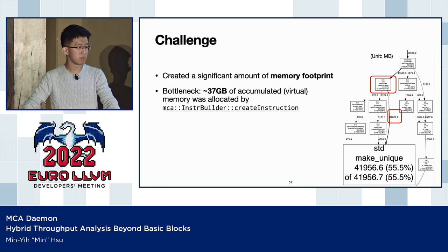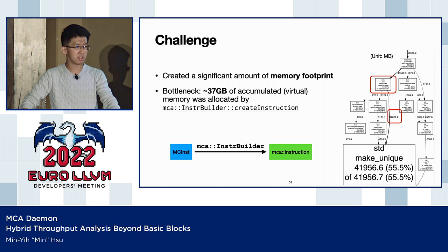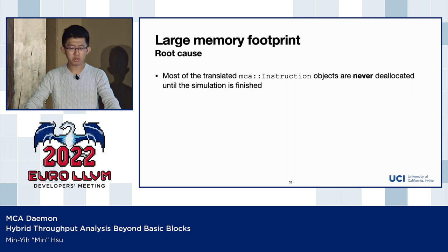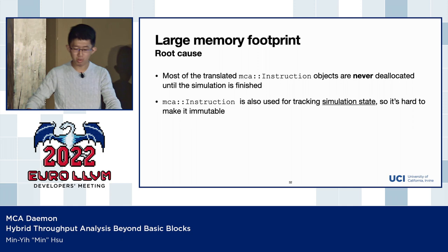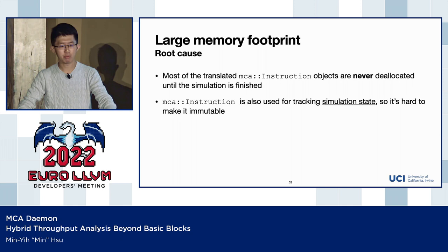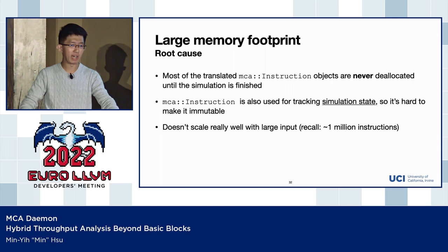This function was 'InstBuilder converting MCInsts to MCA instructions.' The InstBuilder class is a utility we use to convert MCInsts to MCA instructions. The root cause of this large memory footprint is that most translated MCA instructions are never deallocated until the simulation finishes. Because MCA instructions are used for tracking simulation state, they are stateful and hard to make immutable. That means if the same MCInst appears in multiple places in the trace — for instance, inside a loop — we need to create an MCA instruction for each appearance, so it doesn't scale well with large inputs.